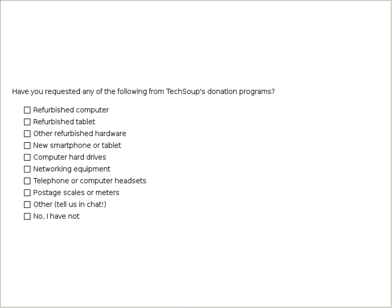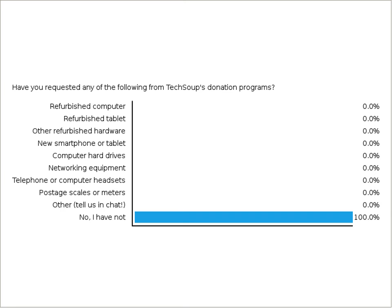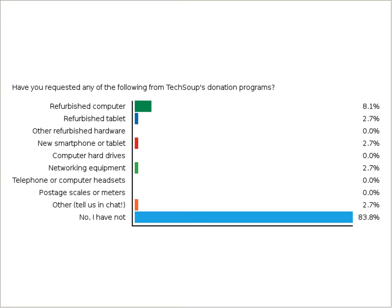TechSoup is probably best known for its software donation programs, but we also have a growing catalog of hardware products thanks to partners like CDI and others. So we're going to do a quick poll to see how many of you are already using TechSoup's programs — just click on the screen for which items you have accessed through TechSoup's donation programs. If you've accessed multiple donations, feel free to click multiple options. Most people appear to be new to TechSoup's hardware programs, so be sure to stay tuned at the end when Barb shares what we have available.